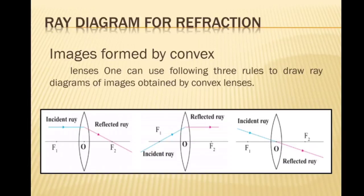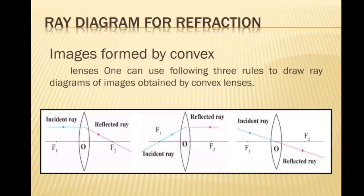The position, size, and nature of images can be obtained with the help of these diagrams. There are three rules to draw ray diagrams of images obtained by convex lenses. First rule: when the incident ray is parallel to the principal axis and falls on the convex lens, the refracted ray passes through the principal focus. Second rule: when the incident ray passes through the principal focus, the refracted ray gets parallel to the principal axis. Third rule: when the incident ray passes through the optical center of the lens, it passes without changing its direction.